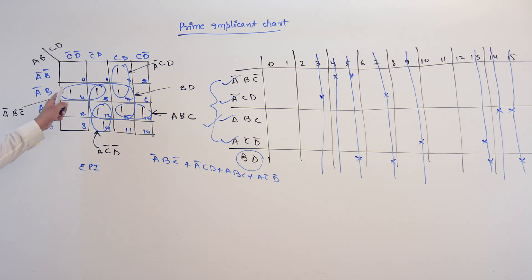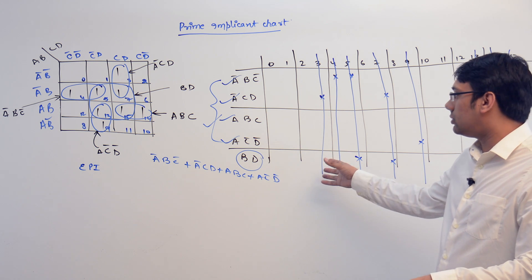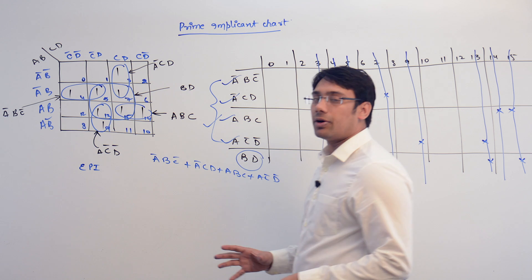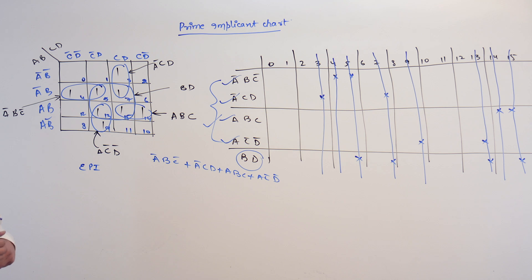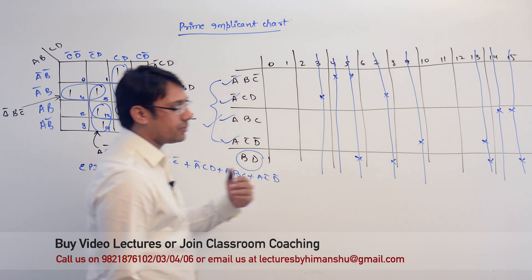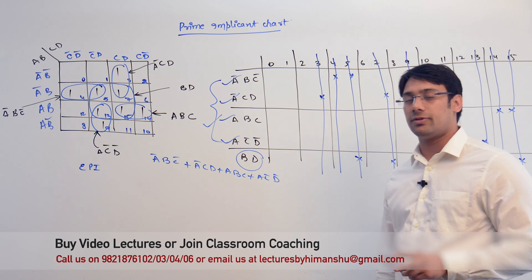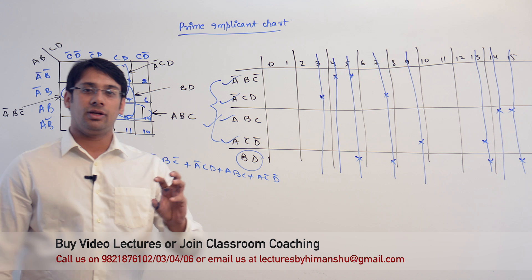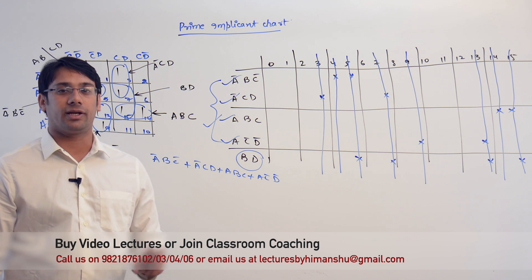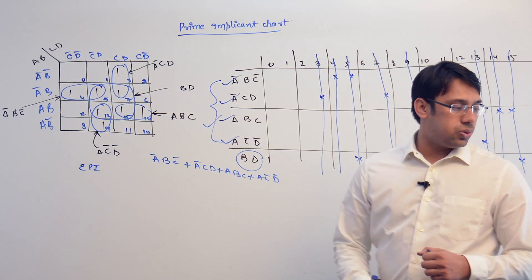So this was the case for this particular question. It is not always necessary that you will not be adding any non-essential prime implicant in the solution. In some cases, it will be important to add non-essential prime implicants because without them you will not be covering some particular terms. Let me take one more example where we will see such a case.